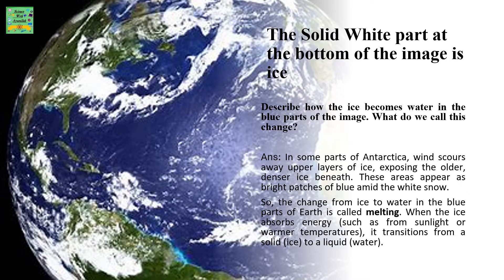The change from ice to water in the blue parts of Earth is called melting. When the ice absorbs energy, such as from sunlight or warmer temperatures, it transitions from a solid ice to a liquid water.